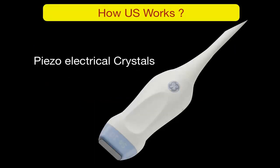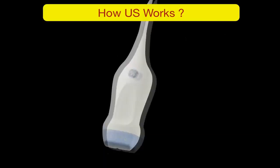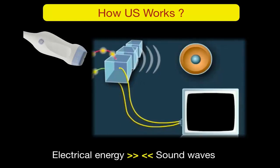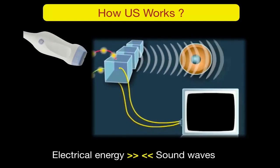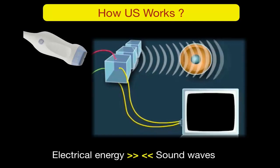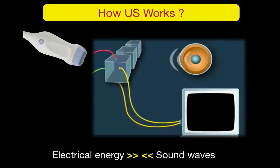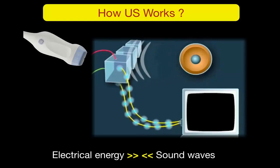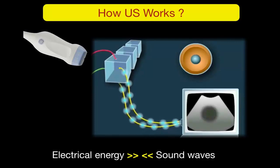The key to how ultrasound works is the piezoelectric crystal located at the tip of the ultrasound probe. These crystals convert electrical energy into sound waves and vice versa. The probe receives electricity from the machine, the crystal converts it into a sound wave and sends it to the object. Depending on the type of object, some sound bounces back to the probe, which converts it into electrical signals sent to the screen, where the object is plotted.